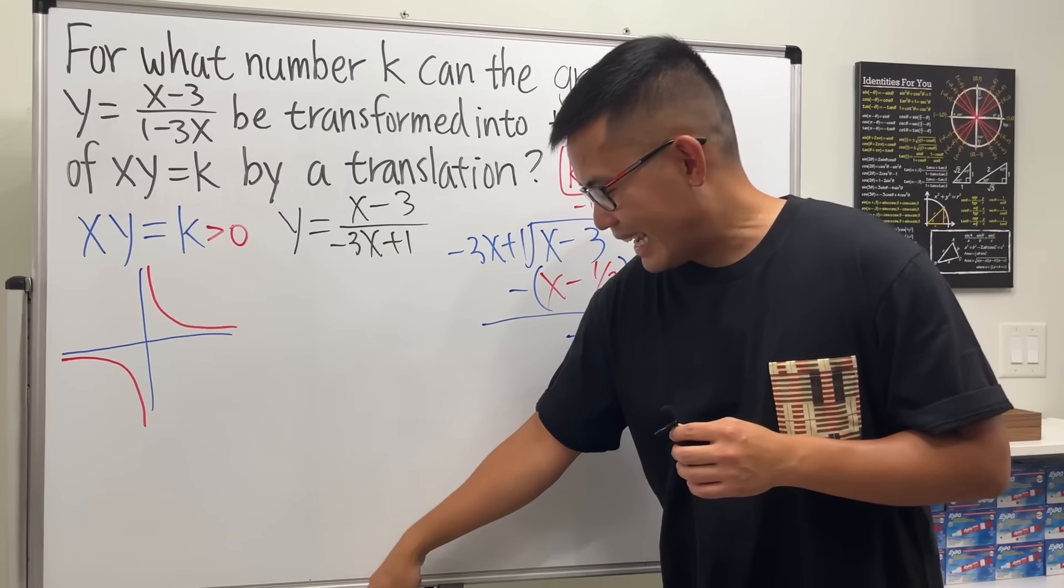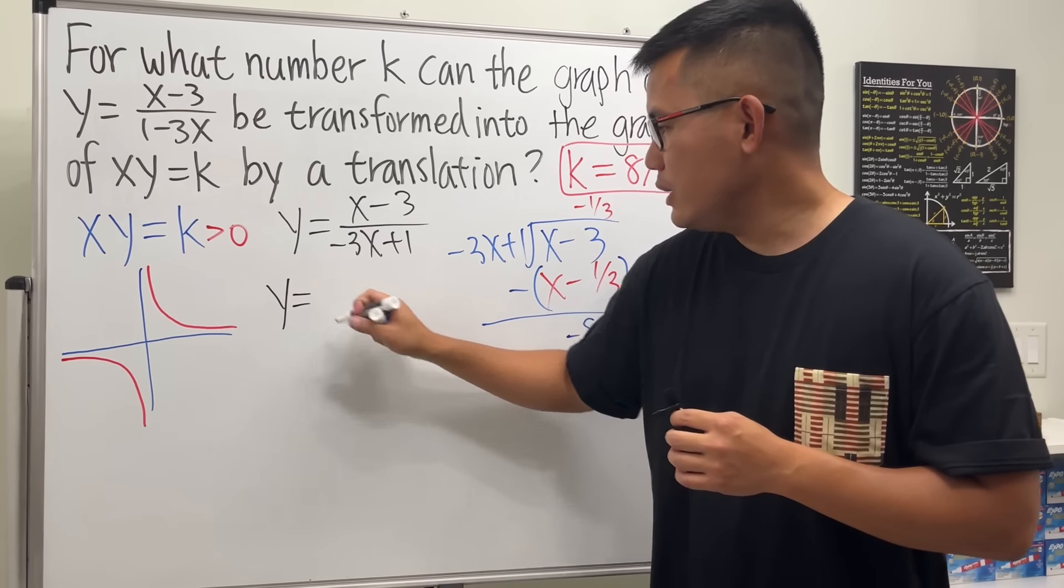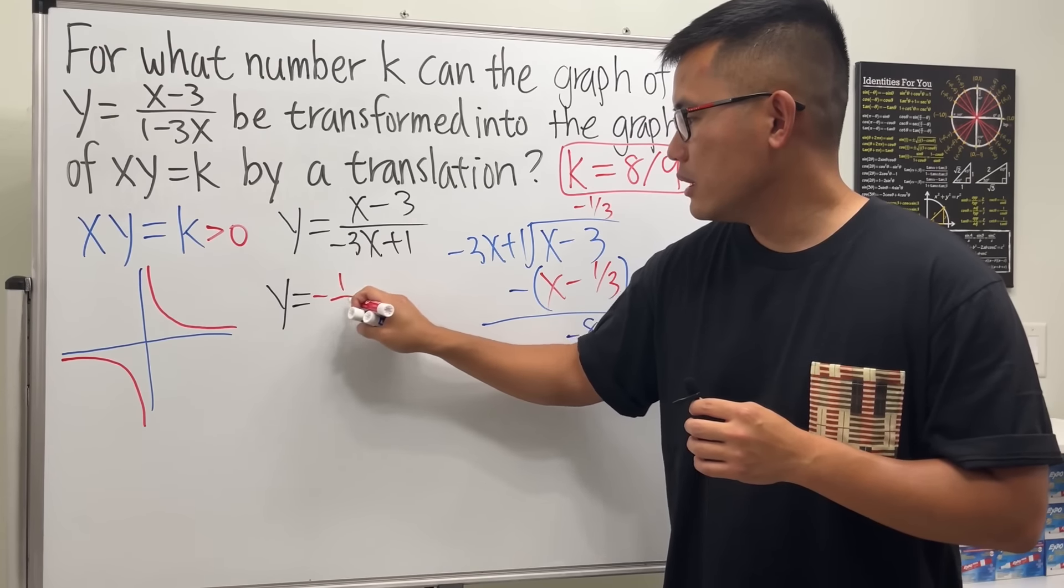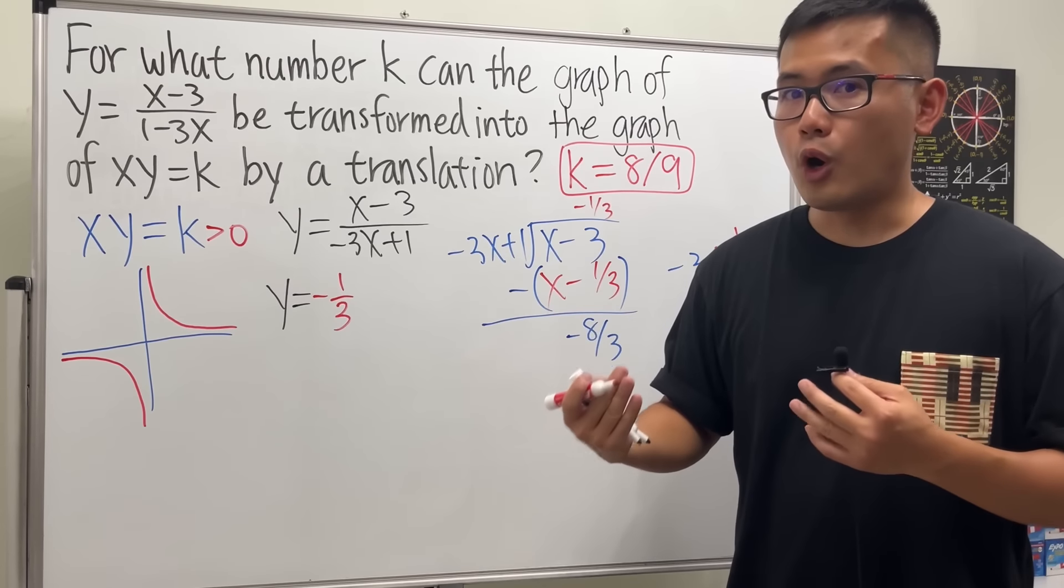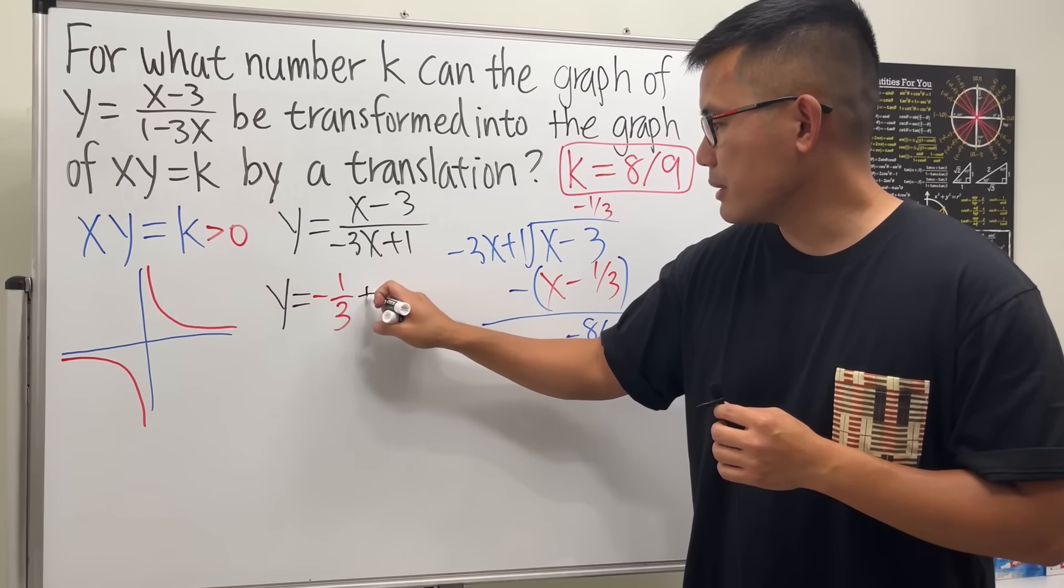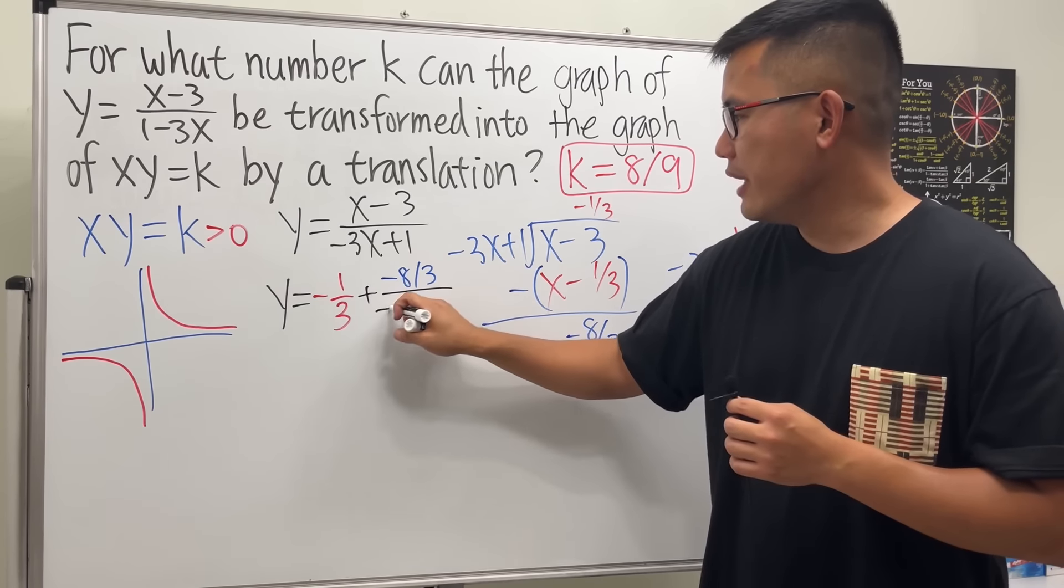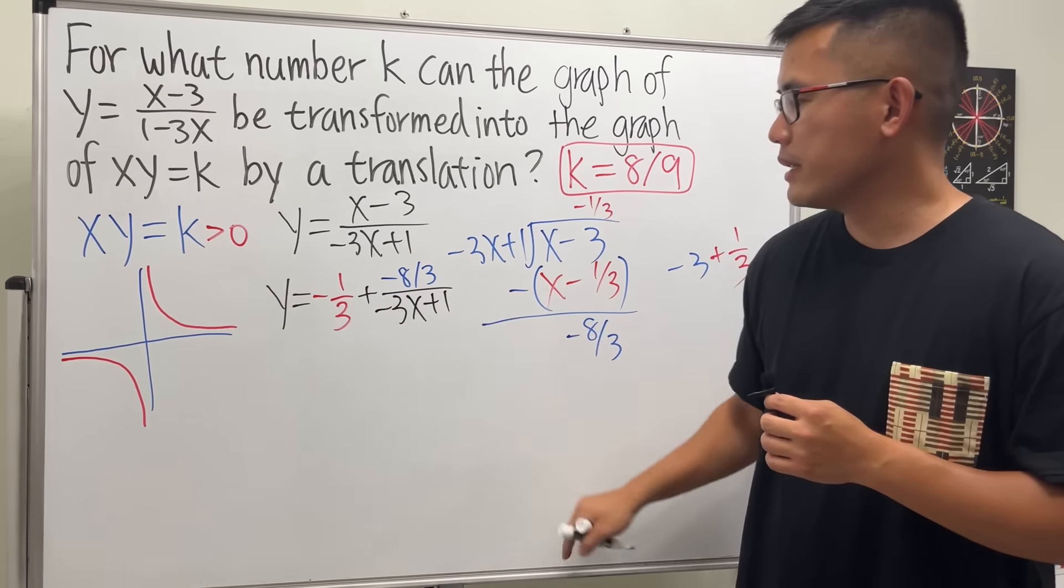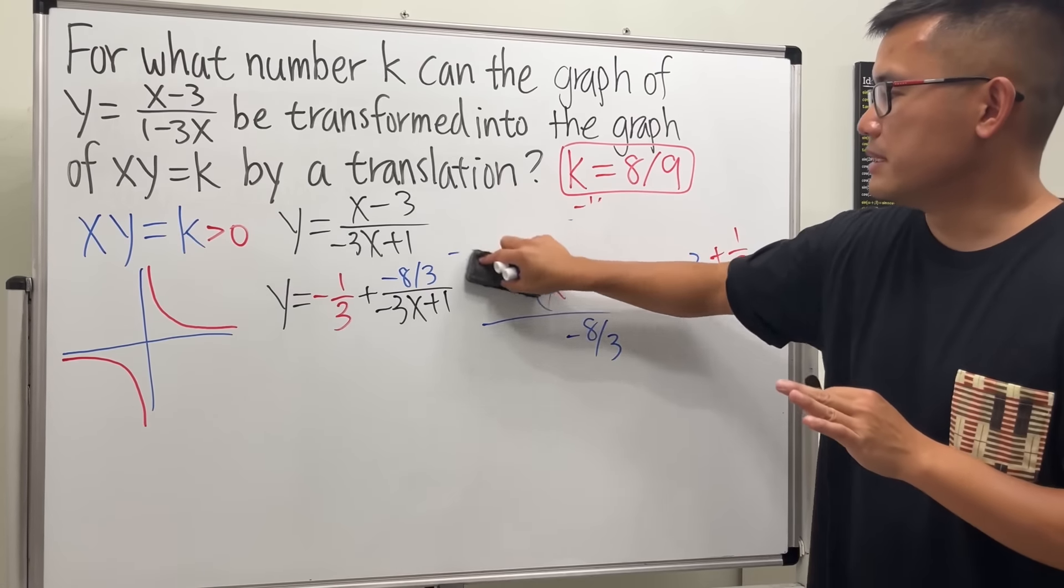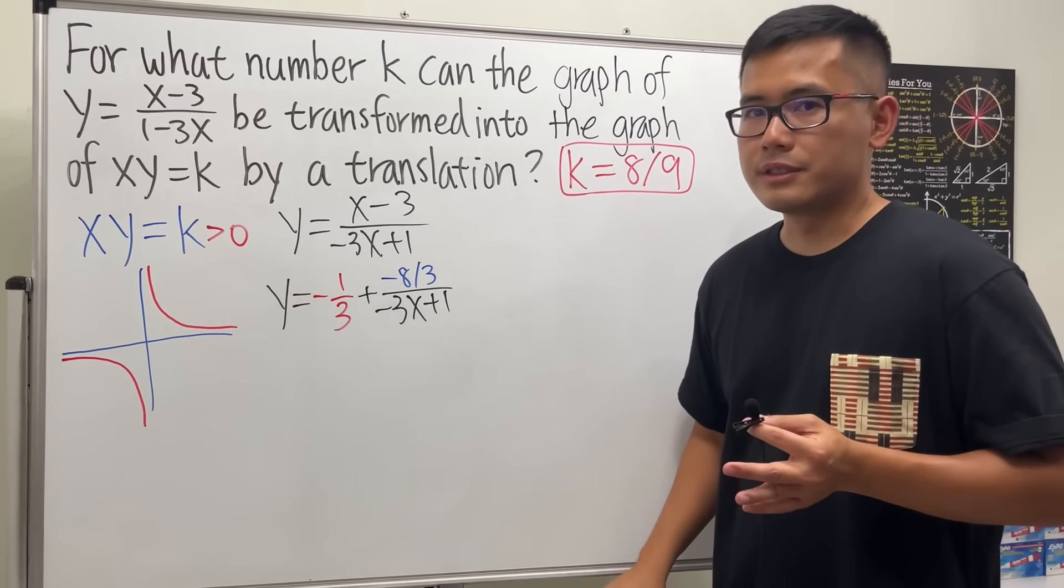So once we have this, we can come back here and say y is just equal to... Well, this number negative 1 over 3. In fact, it's just the new horizontal asymptote. And then we will have to put this down. And we'll just put this down as plus negative 8 over 3 over negative 3x plus 1. And in fact, this will tell you the vertical shift of the graph. Okay. So far, so good.